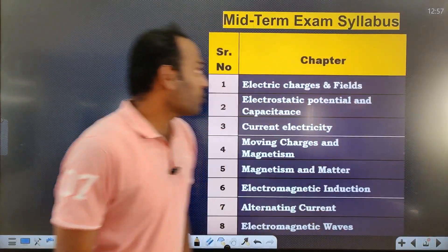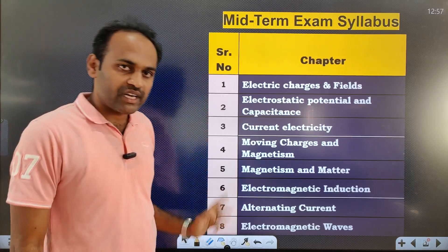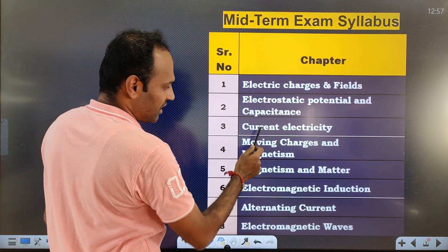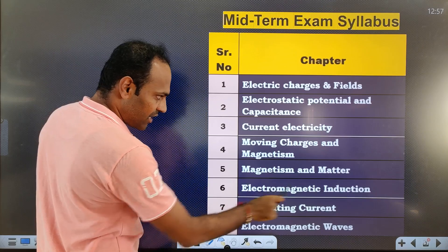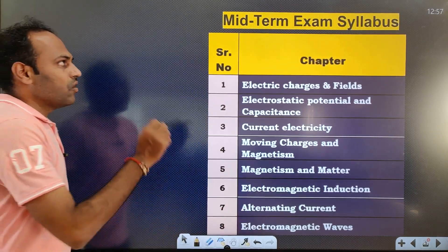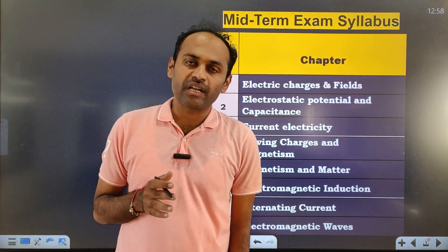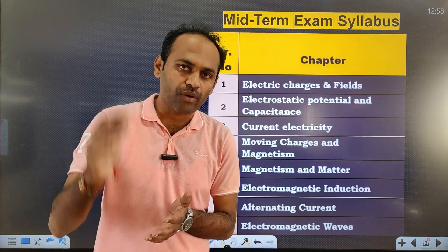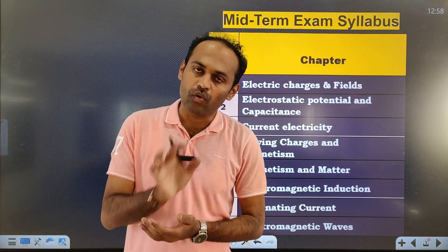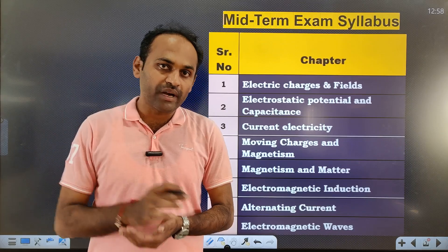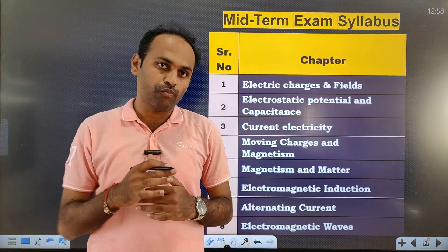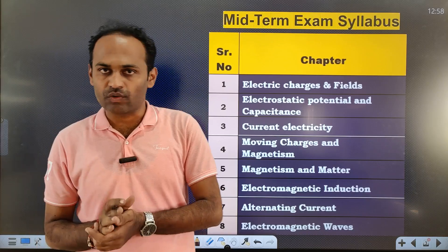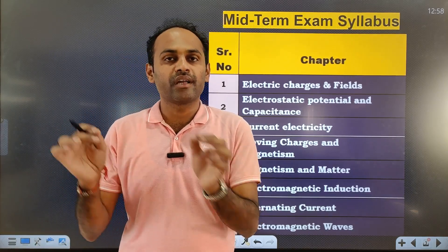The syllabus for midterm examination is part one textbook, chapters 1 to 8: Electric Charges and Fields, Potential and Capacitance, Current Electricity, Moving Charges and Magnetism, Magnetism and Matter, Electromagnetic Induction, Alternating Current, and Electromagnetic Waves.